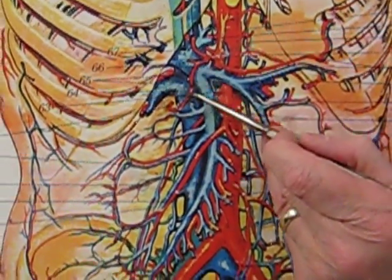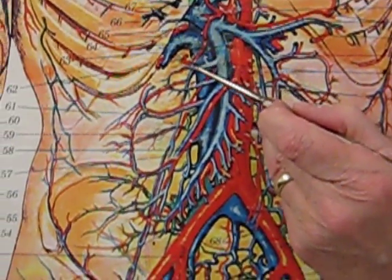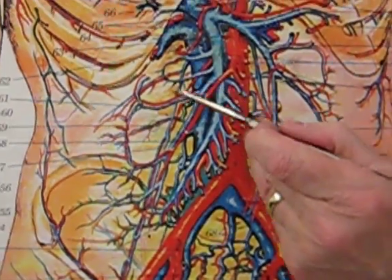Then here we have our gastroduodenal artery, goes posterior to the pylorus and duodenum, branches into a branch you don't have to know that goes down to the duodenum.